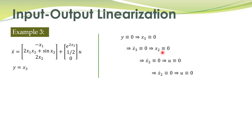Since x2 dot is identically zero and x2 is also zero, this term is zero, that term is zero, the left-hand side is zero, therefore u is also equal to zero. From the first equation we get x1 dot equal to minus x1. These are the zero dynamics, and the origin of the zero dynamics is asymptotically stable.